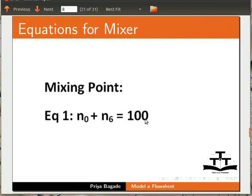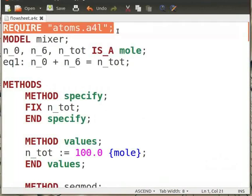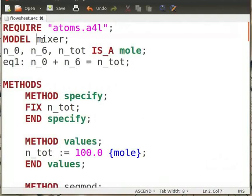I already have the code for mixer in a text file. Let me explain the code. Open the file flowsheet.a4c in a text editor. Here we require atoms.a4l library to use variable type mole. I have named the model as mixer. Let's name the streams of mixer as n0, n6, and n_tot.